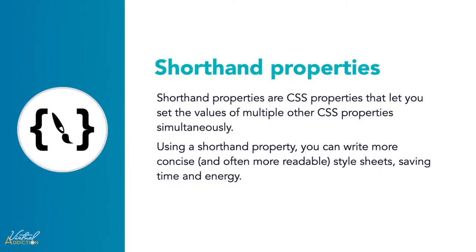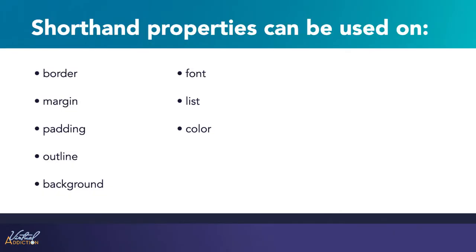Shorthand properties are CSS properties that let you set the values of multiple other CSS properties simultaneously. Using a shorthand property, you can write more concise and often more readable style sheets. This will save time and energy. We've already discussed shorthand properties briefly in regards to the font properties, but many of the other CSS properties allow you to use shorthand as well.